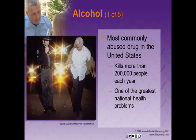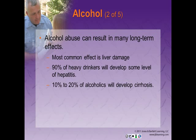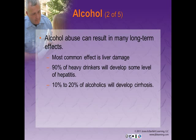Alcohol is the most commonly abused drug in the United States and kills more than 200,000 people every year. Alcoholism is one of the greatest national health problems along with heart disease, cancer, and stroke. Alcohol abuse can result in many long-term effects: the most common is liver damage — 90% of heavy drinkers develop some level of hepatitis and 10–20% of alcoholics develop cirrhosis. Other long-term effects include pancreatitis, erosive gastritis, increased risk for breast or colorectal cancer, and atrophy of the cerebrum resulting in permanently reduced mental function.